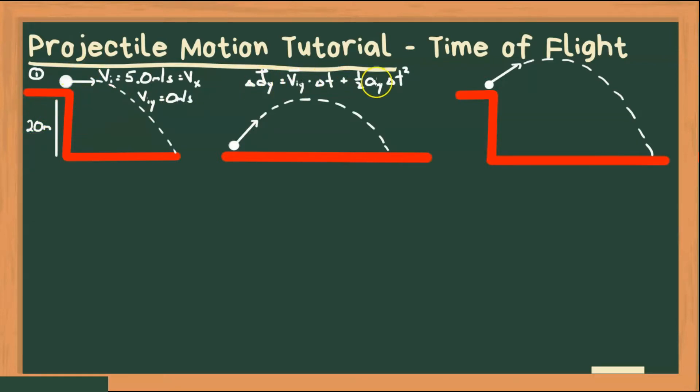From that, we can solve this equation. We know what delta dy is, we know what vyi is, and we always know what a is. So let's try this. So delta dy is equal to viy times time plus 1 half ay times time squared. All right, so since viy is going to be 0, this whole term is going to just go away. So we're left with delta dy is equal to 1 half ay times delta t squared.